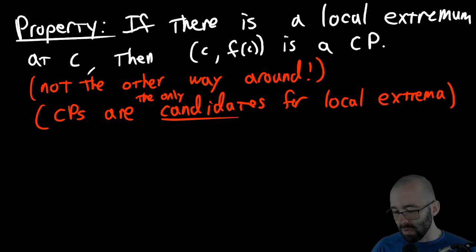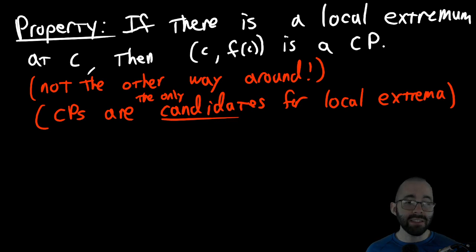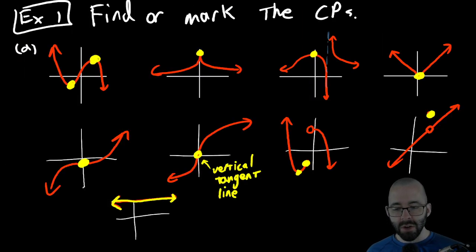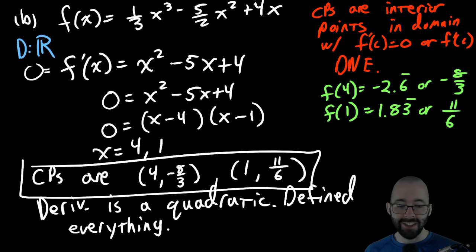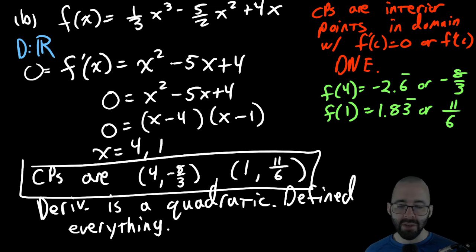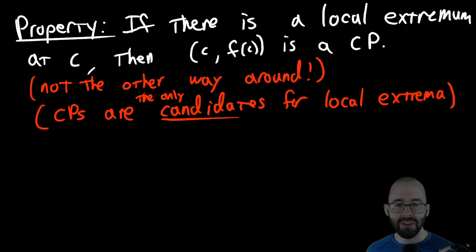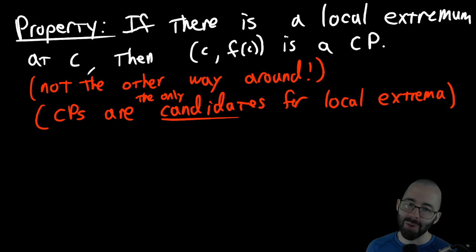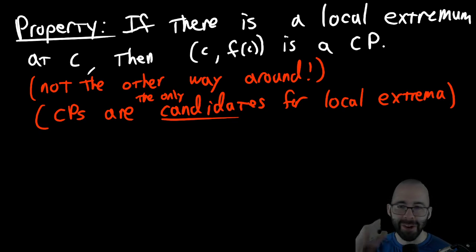We'll do a bit more in the next video. In section 4.5 we talk about more ways of finding these — notice that for critical points we did it graphically and analytically. We're not going to do local extrema analytically until 4.5, where we use the first derivative test and the second derivative test. Let me know if you have any questions and good luck!